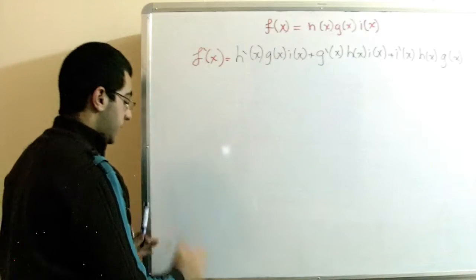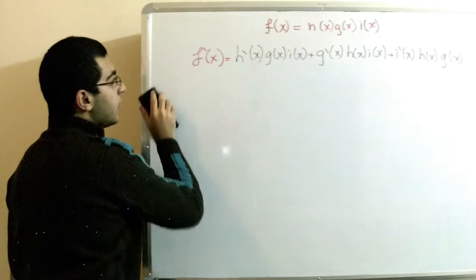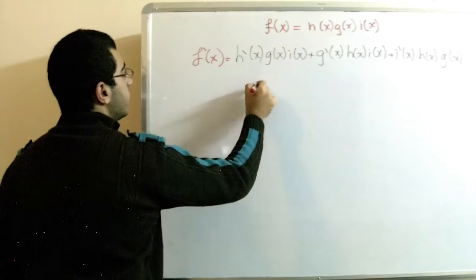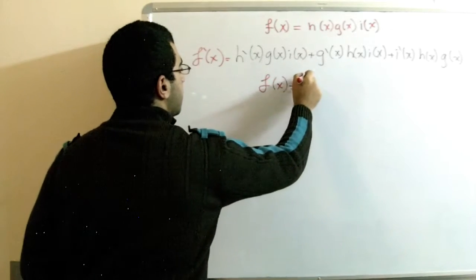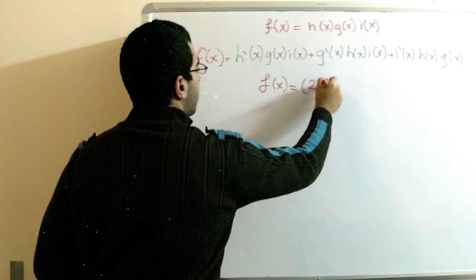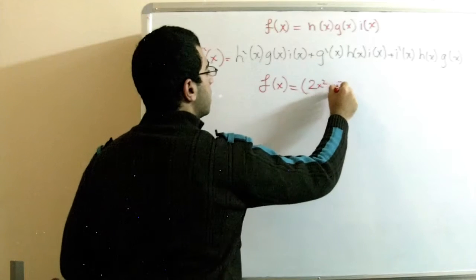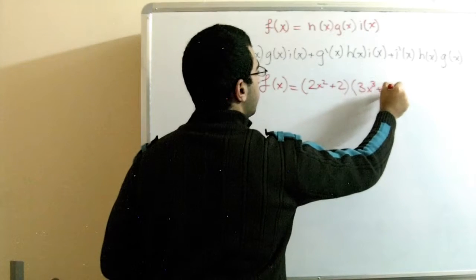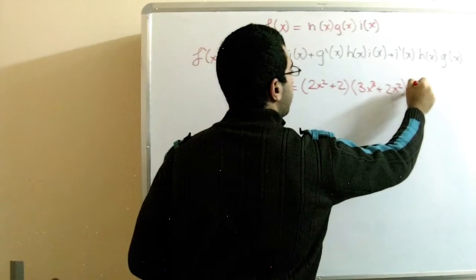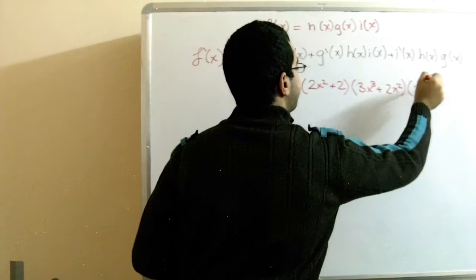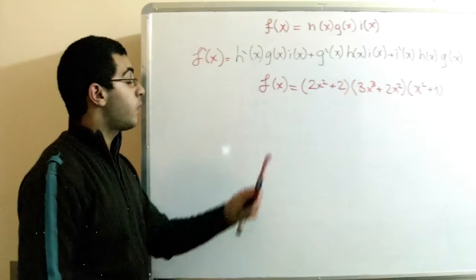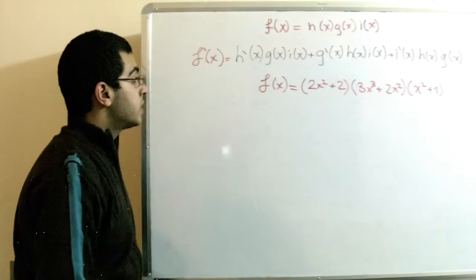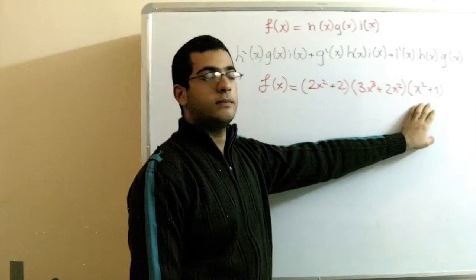We will have an example to illustrate this. So keeping the rule in mind, if we have a function which is (2x² + 2)·(3x³ + 2x²)·(x³ + 1), and we want to get its derivative — this corresponds to h(x)·g(x)·i(x). It's very easy.